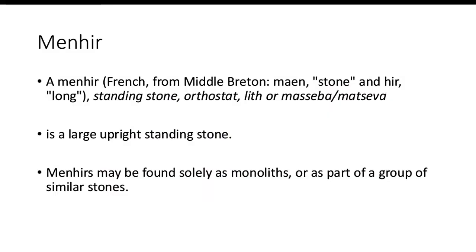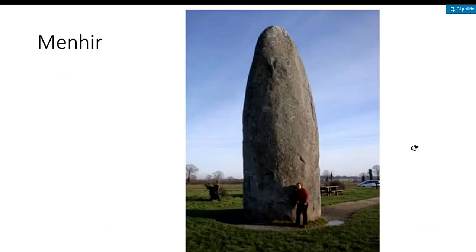Another megalithic structure is the menhir — a French term from Middle Brittany meaning 'standing stone' or 'massive stone.' A menhir is a large upright standing stone, a single piece of huge stone erected vertically. An example is the obelisk in Egypt, which is a single slab of stone erected upright.